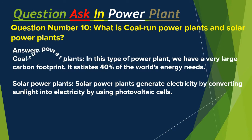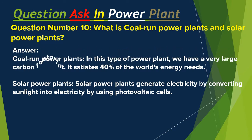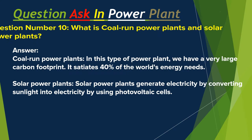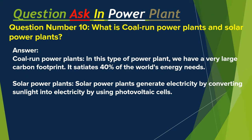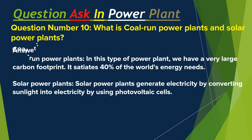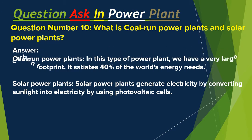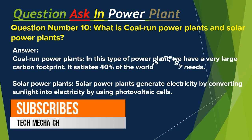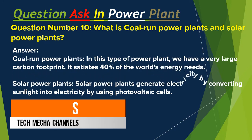Question number ten: What are coal-run power plants and solar power plants? Answer: Coal-run power plants — in this type of power plant we have a very large carbon footprint; it satisfies 40% of the world's energy needs. Solar power plants — solar power plants generate electricity by converting sunlight into electricity by using photovoltaic cells.